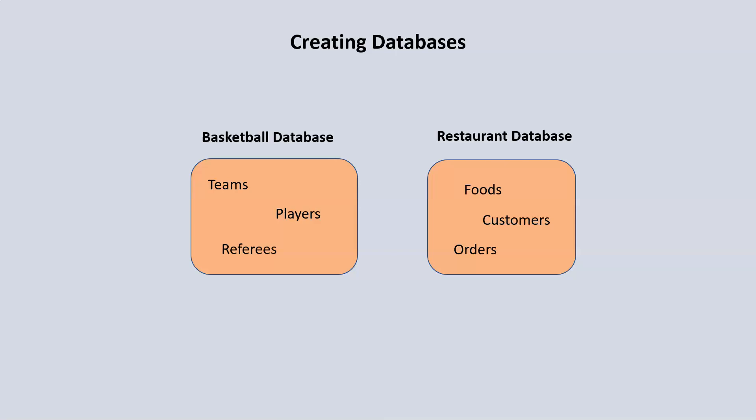Within the database we create, for instance, we can have a basketball database that contains information about different teams, and that will be represented within a table. We can also have information about basketball players and information about referees as well. We can also have another database that contains information about different types of foods, customer information, and customer orders.